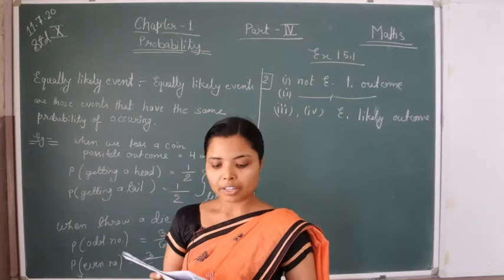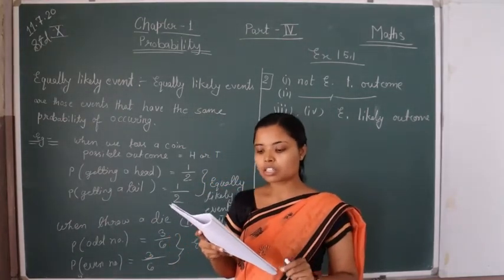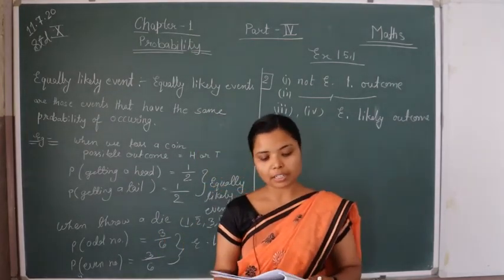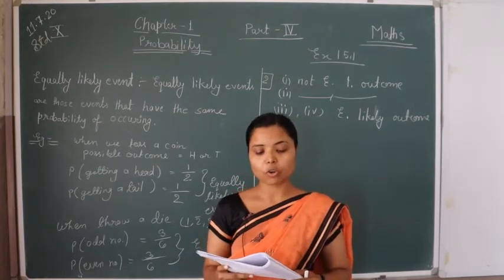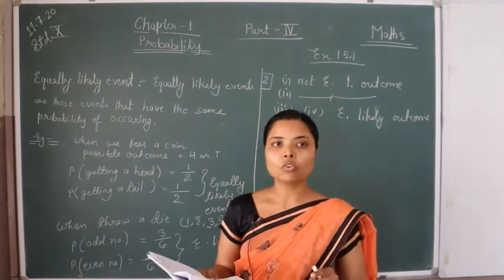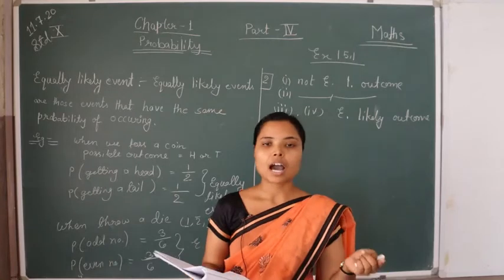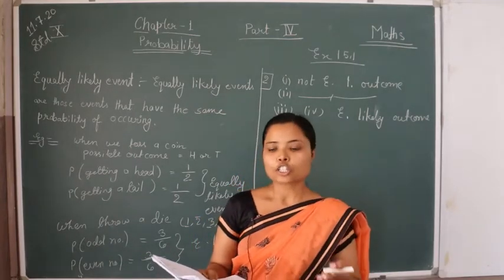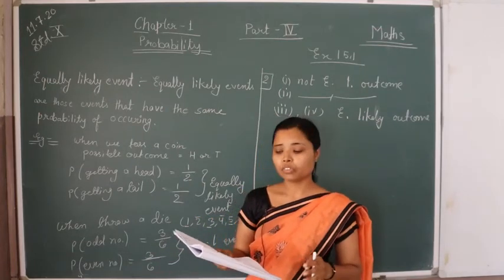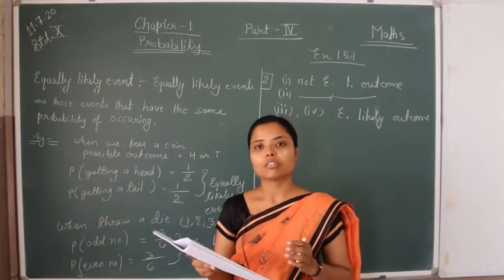Question 3: why is tossing a coin considered to be a fair way of deciding which team should get the ball at the beginning of a football game? At the beginning of a football game when we toss a coin, the possible outcomes are only two — head or tail — so this is surely an equally likely event, and that is why it is considered to be a fair way.